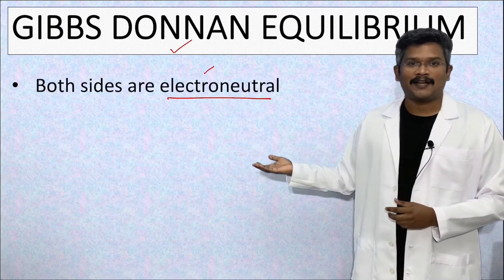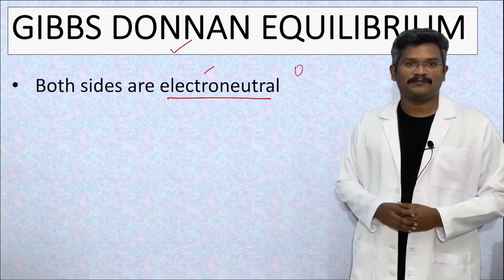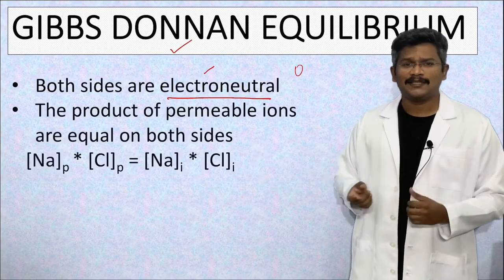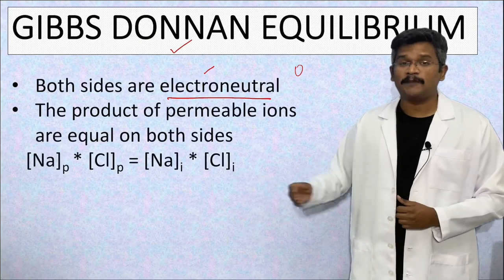Each side has a net charge of zero. The product of permeant ions on both sides is equal. This also can be rewritten as Gibbs-Donnan ratio.